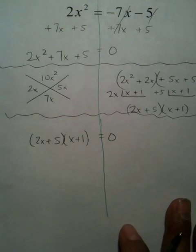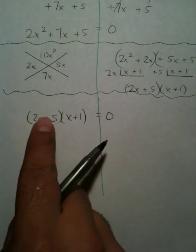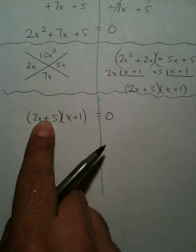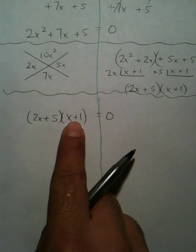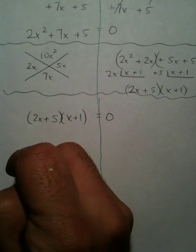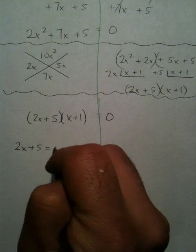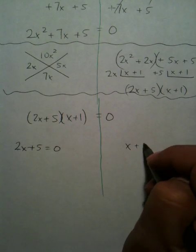So now what you're doing is some more scratch work. You're saying, I want this quantity in the middle to be 0, and I want this quantity in the middle to be 0. And so you have like two different equations, one of them being 2x plus 5 equals 0, and the other one is x plus 1 equals 0.